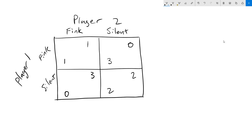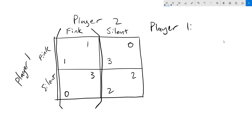Let's return to our prisoner's dilemma game and talk about what our two players' best responses are going to be. Let's think about player one's best response. Remember that we need to think about a contingency plan for anything that player two is going to throw at us. So first we want to think about what would be our best action if player two thinks — we're going to look at this column of the table. We assume player two is going to think. What should we do as player one? Well, one is better than zero, so our best response is to think if player two thinks.